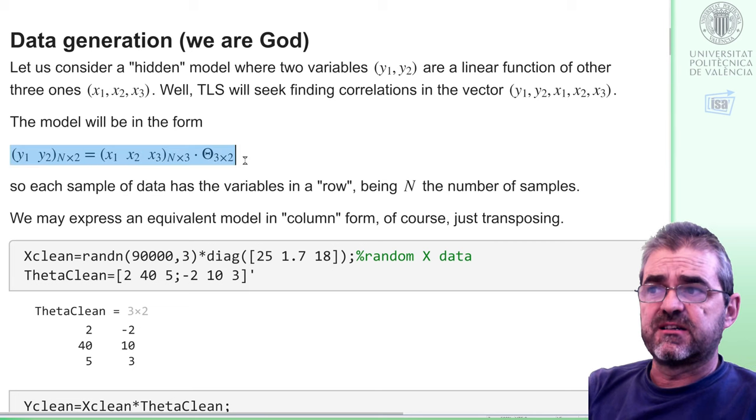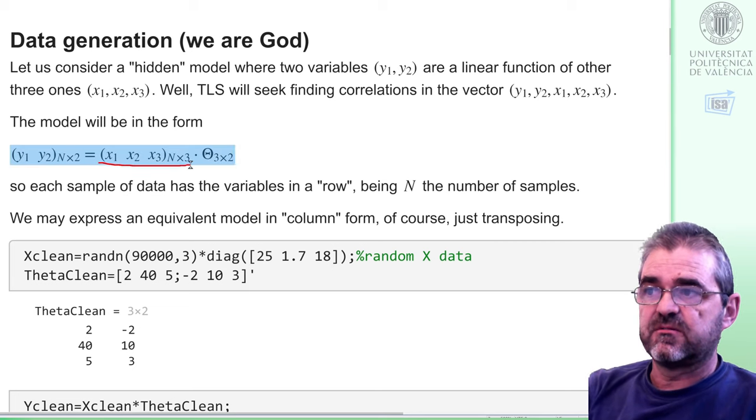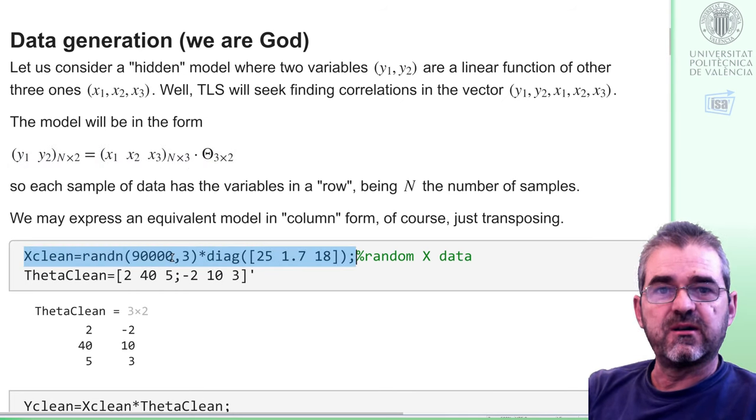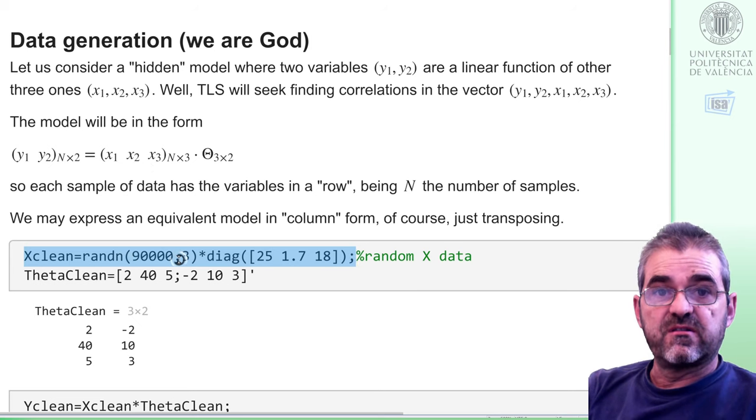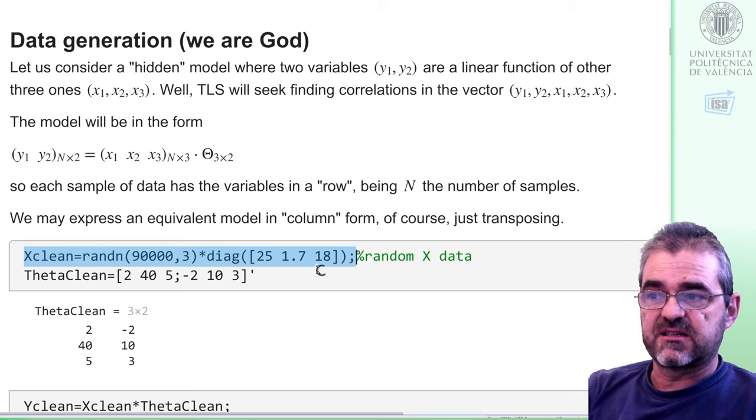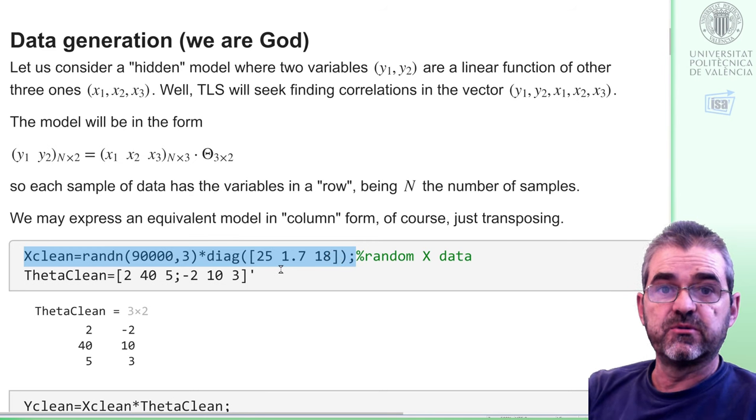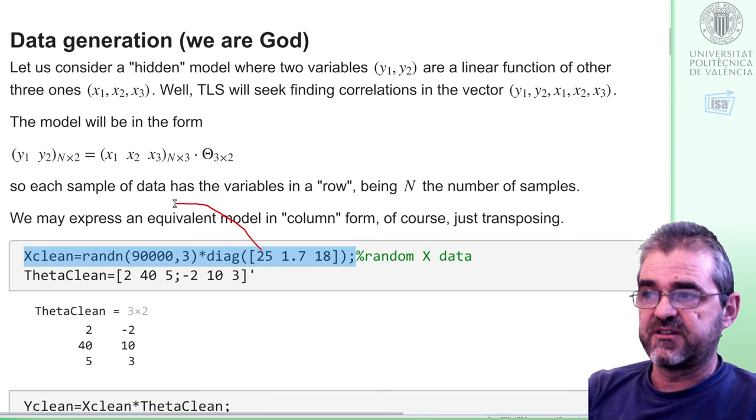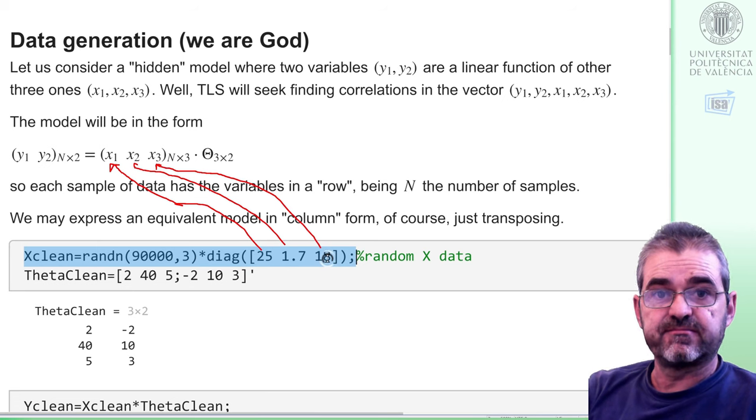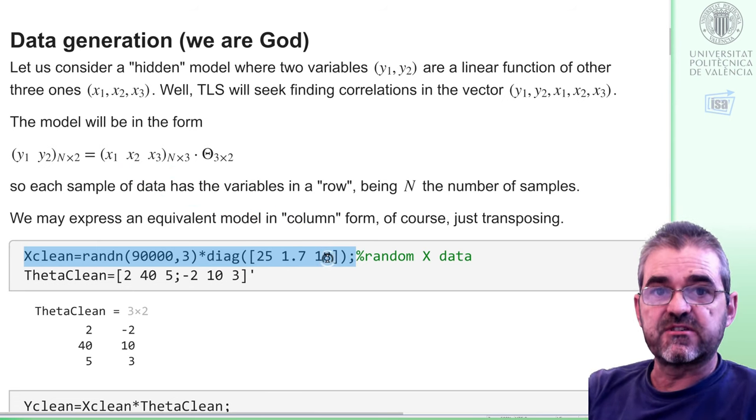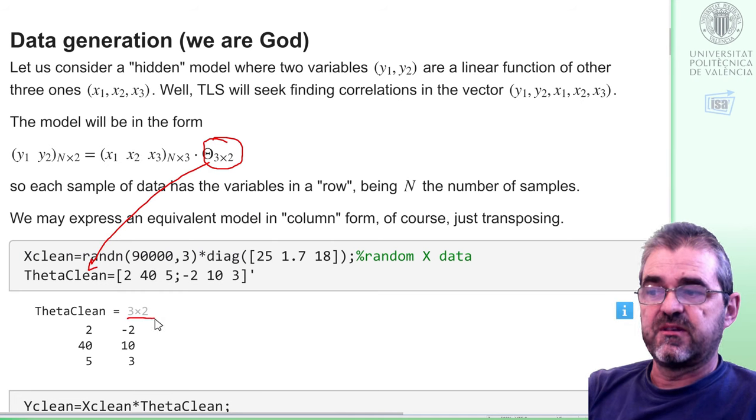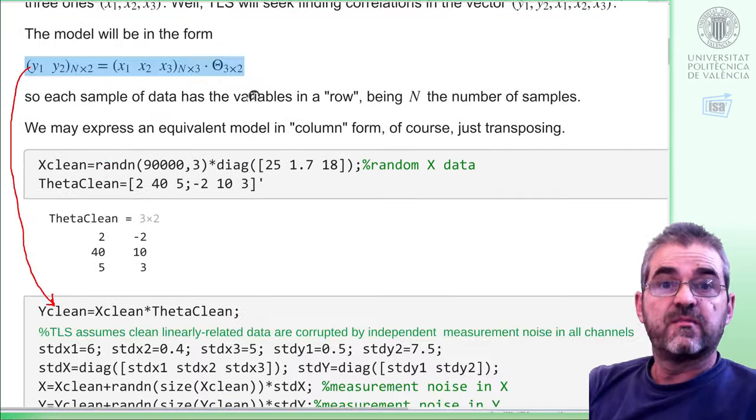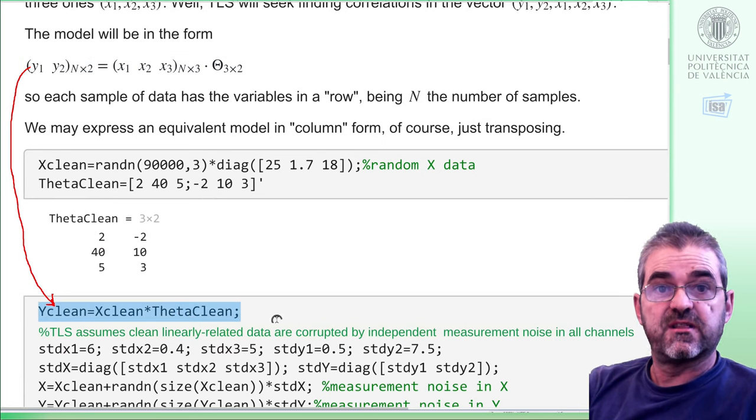Parameters theta must be three times two so that matrix product can be carried out. And if we have many samples then we get these dimensions. Of course if we transpose everything then we would get the expression for data being in column form. So let us generate this data first by generating the x variables. I will have 90,000 samples of three x variables.